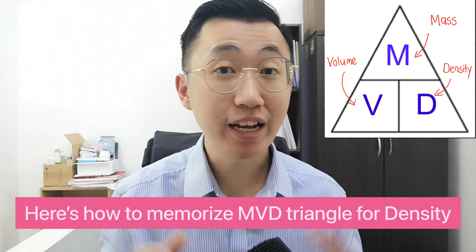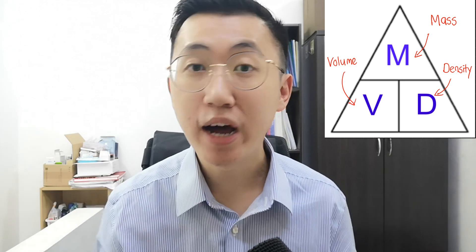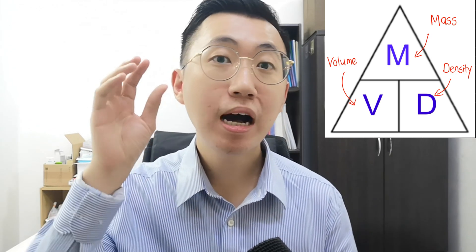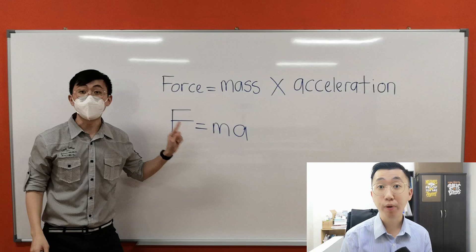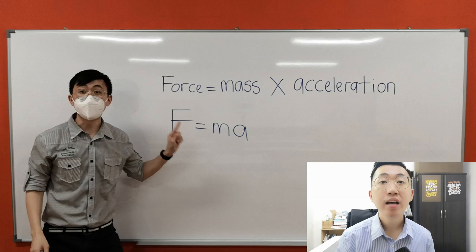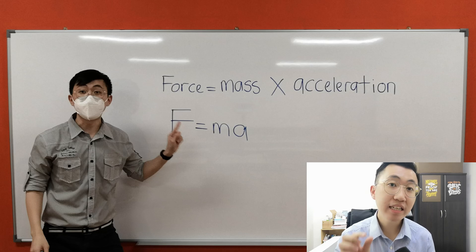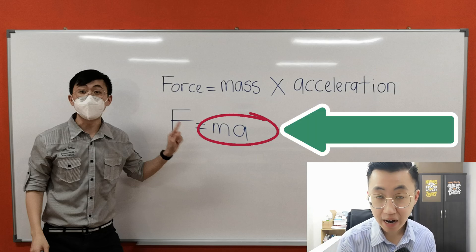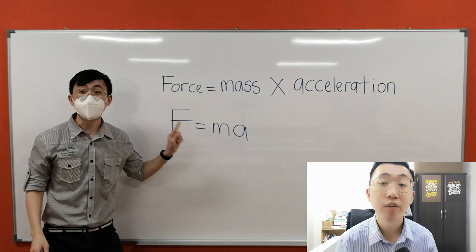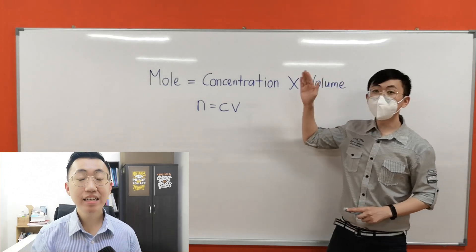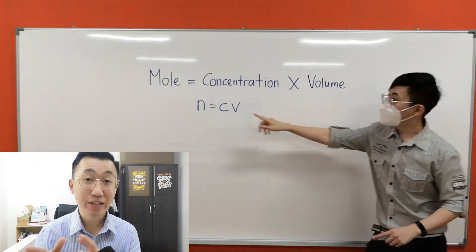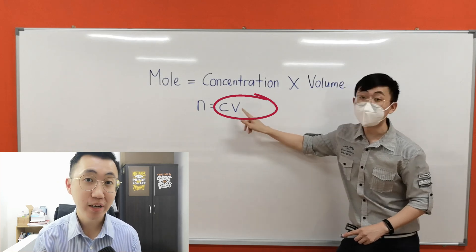So there you go — three formulas from the density triangle MVD. For a funny acronym, think 'money very dirty' — MVD. Now if your teacher didn't provide the formula triangle, you can practice making one yourself. For F equals MA, M times A is the multiplication part, so put M and A at the bottom and F on top. Another one: if the teacher teaches you N equals CV, do you know how to put them into the formula triangle?